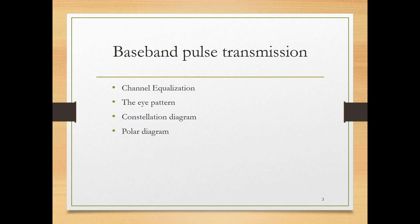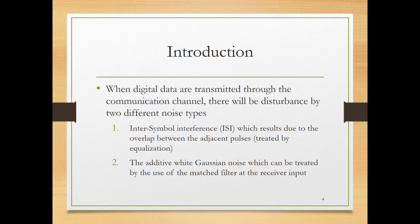Besides we will also go over channel equalization, the eye pattern constellation diagram, block-out diagram of practical communication systems. So when digital data is usually transmitted through the communication channel there will be disturbance by two different noise types when you transmit your data.